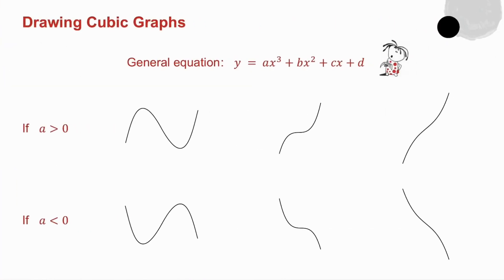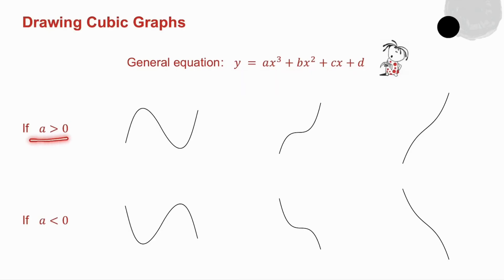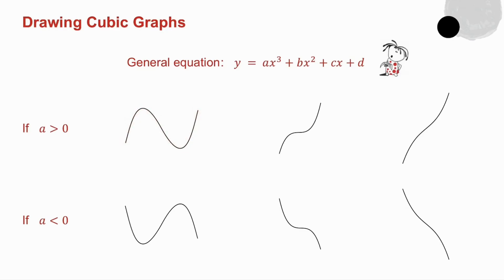The general equation of a cubic graph is y equals ax cubed plus bx squared plus cx plus d. If a is positive the graph has a general upward direction. It could have two turning points, a stationary point where the graph is flat, or it could have neither a turning point nor a stationary point.